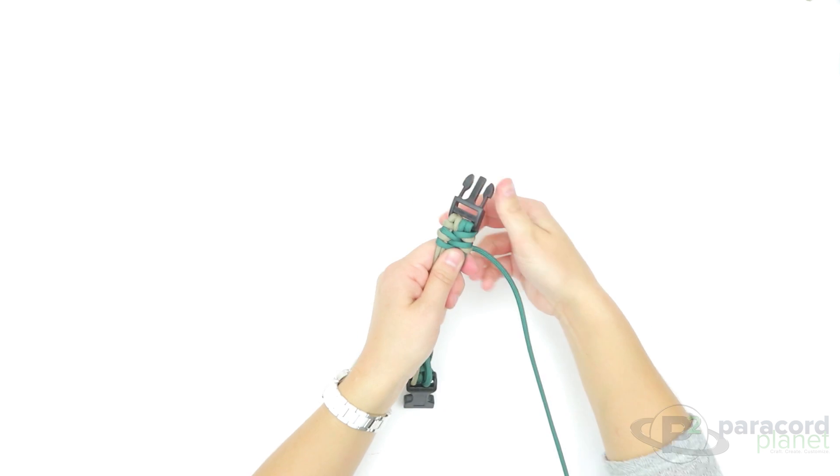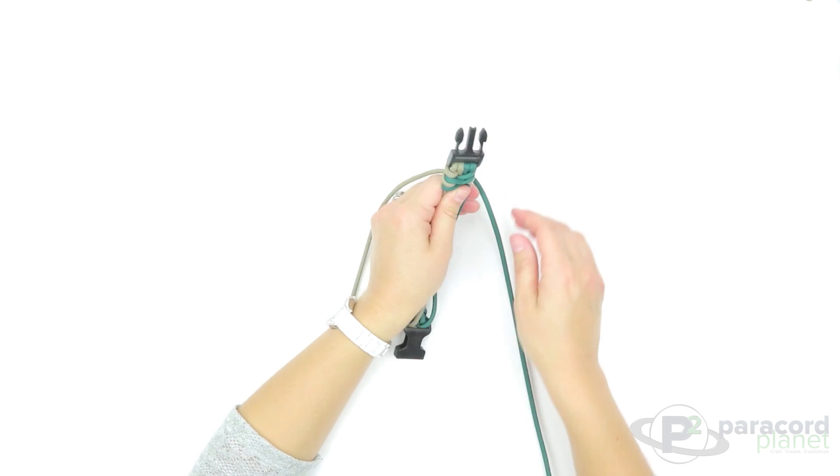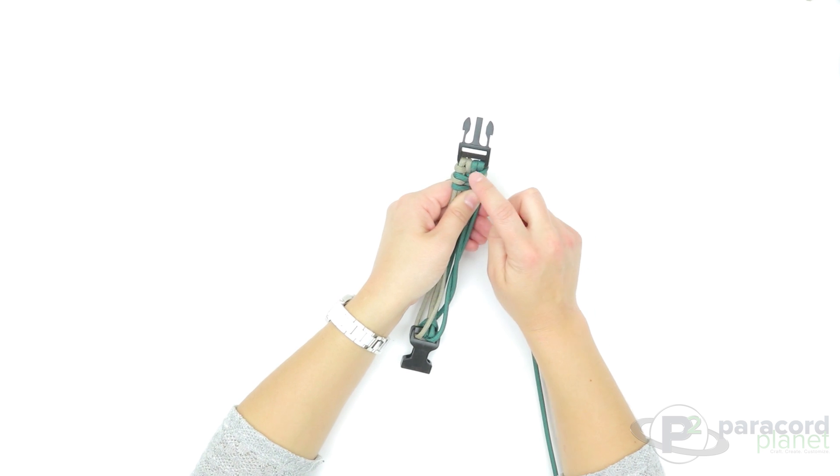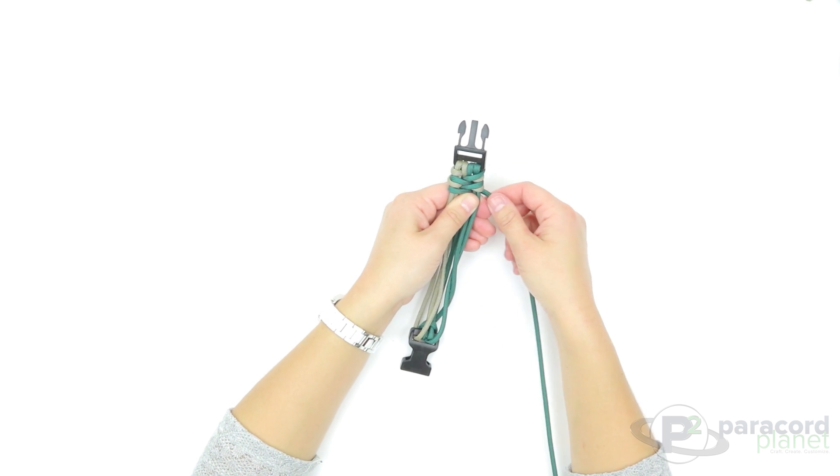There you can see the pattern is forming. Your cord that you start with is your accent cord because that is only going over two.